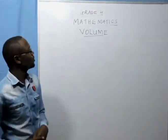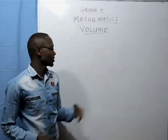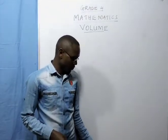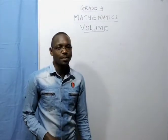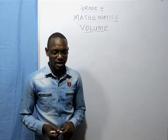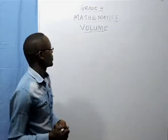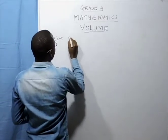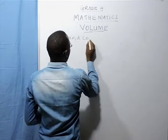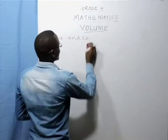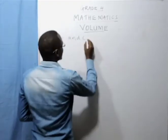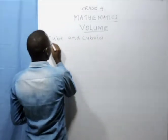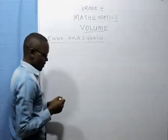Today we are going to look at volume. We looked at mass in the previous lesson, so today we are going to look at volume. So what is volume? Volume is defined as the amount of space that is occupied by a cube or a cuboid. We have something we call a cube and a cuboid. How do we identify cubes and cuboids as we work out with volume?